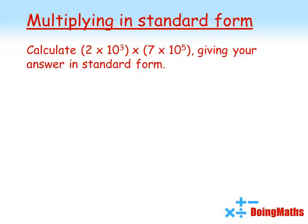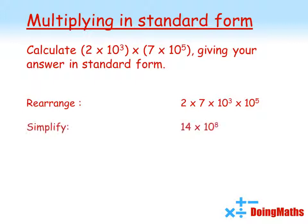First, rearrange so we've got the numbers together — 2 times 7 — and we've got the powers of 10 together. We'll then simplify by doing 2 times 7 to give 14, and 10 cubed times 10 to the power of 5. Remember, when we're multiplying powers of 10 we add those powers together to give us 10 to the power of 8.